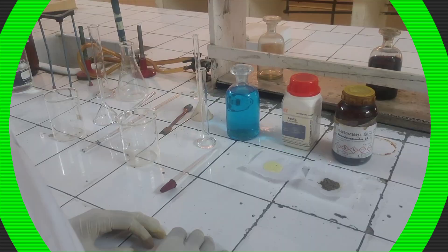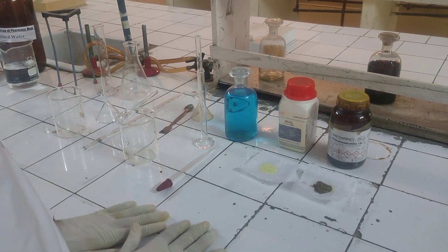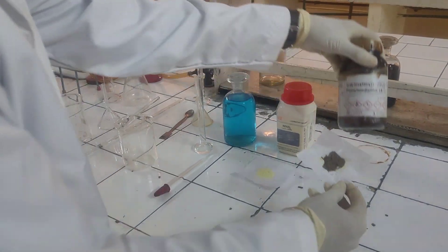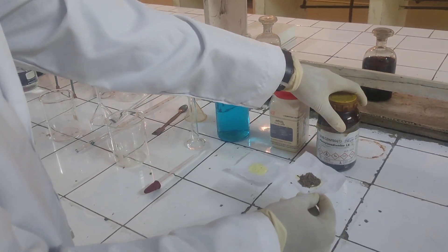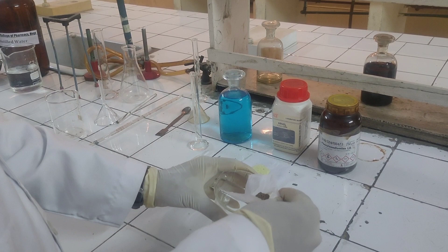Now you can see the synthesis of 2,3-diphenyl benoxazine. First of all take 1.1 gram of orthophenylenediamine and transfer it into beaker.